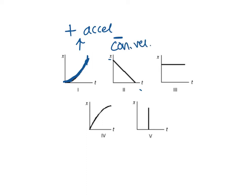The third graph has a horizontal line. A horizontal line means we are not moving — that object is just sitting at that location the whole time.